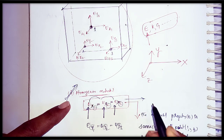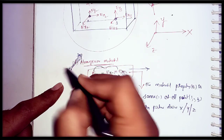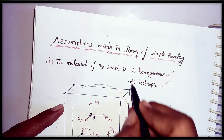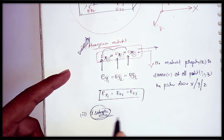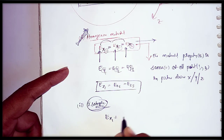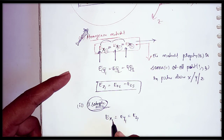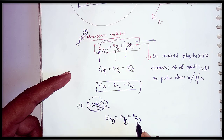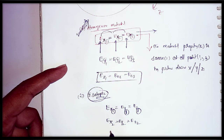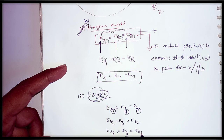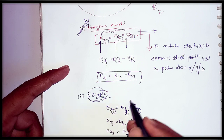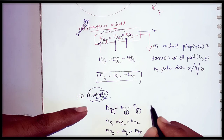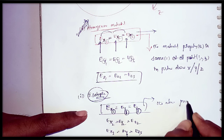If this condition is satisfied by the material, that material is called a homogeneous material. The second property is isotropic. For an isotropic material, the condition is: Ex1 = Ey1 = Ez1, and similarly Ex2 = Ey2 = Ez2, and Ex3 = Ey3 = Ez3. That means at a single point, the material property is the same in all directions — x, y, and z.